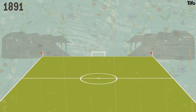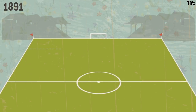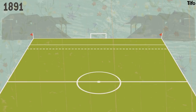The penalty area was actually delineated by a dotted line which ran the full breadth of the pitch, and a 12-yard line — the precursor to the penalty spot — which did the same. Originally, penalties could be taken from any point on that line, and instead of the 6-yard box that we recognise today, the goalkeeper's area was marked by two adjoining circles.